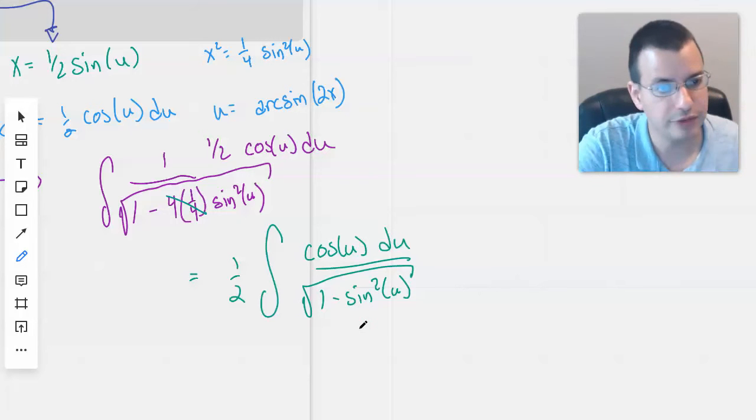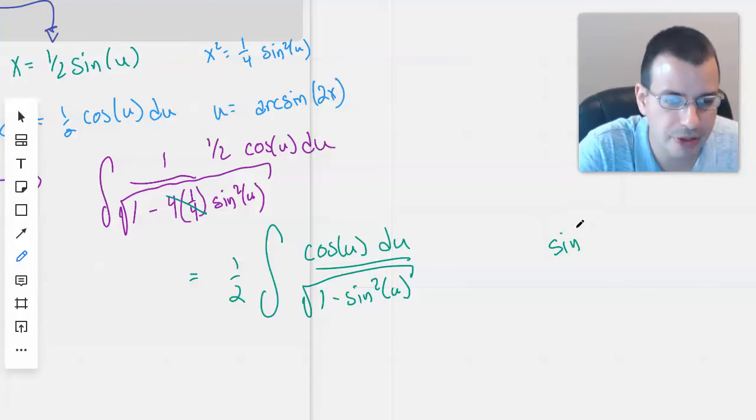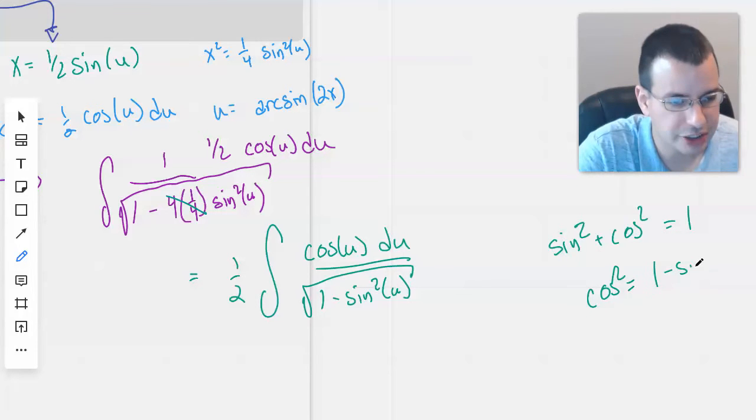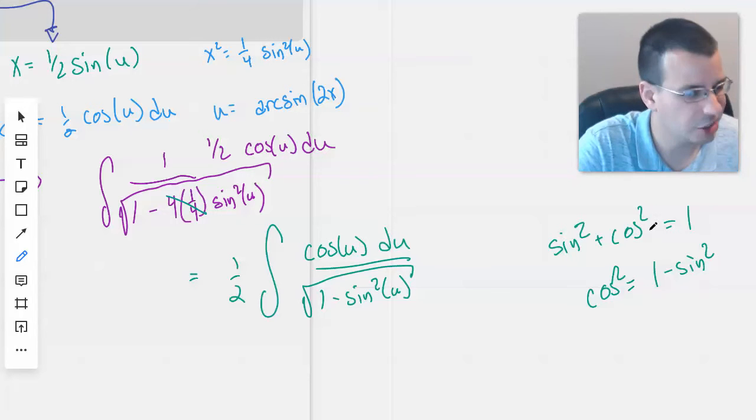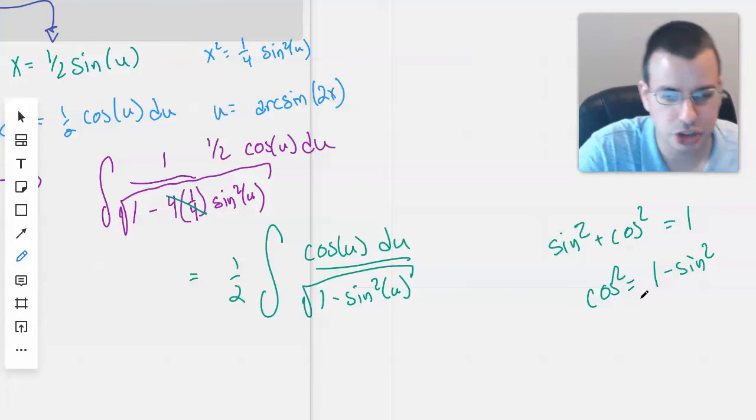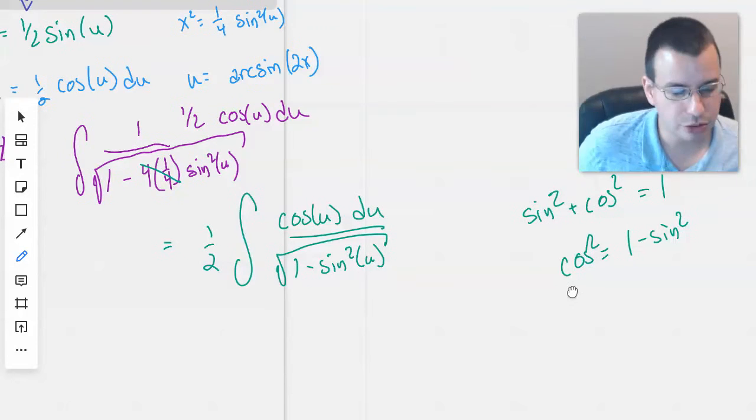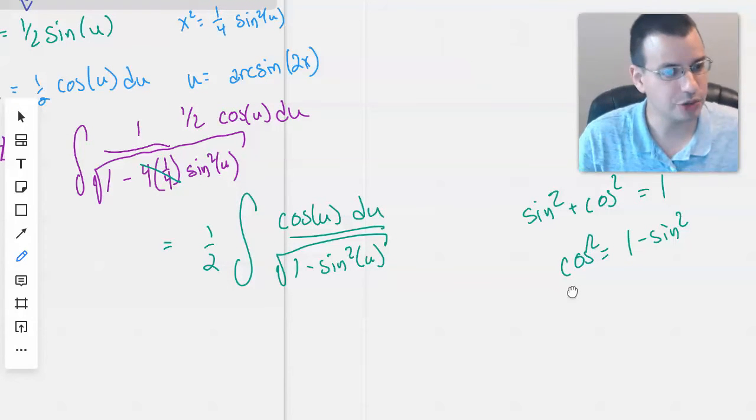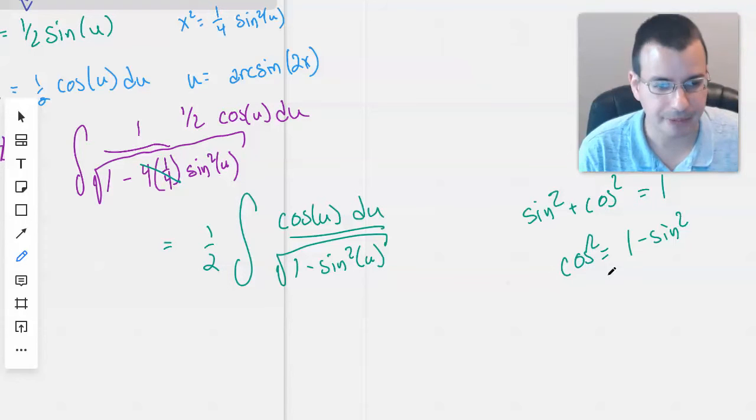Now we need to find out what one minus sine squared of u is. So we do the Pythagorean theorem. Cosine squared, or sine squared, plus cosine squared equals one. Cosine squared equals one minus sine squared. I know there's supposed to be like a u over here. I left it off for convenience. This is my mental thinking scratch paper. I can't actually remember what one minus sine squared equals. So I have to figure it out every time. And I figured out that it's cosine squared.